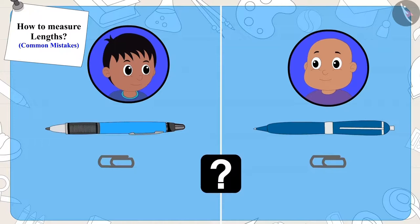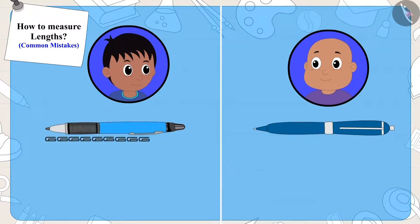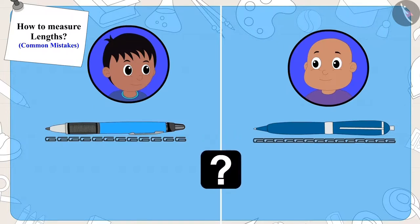Let's see how Raju and Bablu measured the length of their pens. Raju placed the clip in this way and Bablu in this way. Now, can you say where the mistake was?